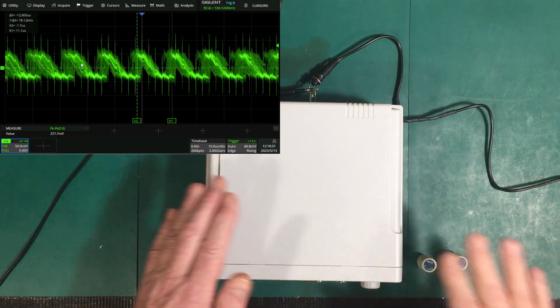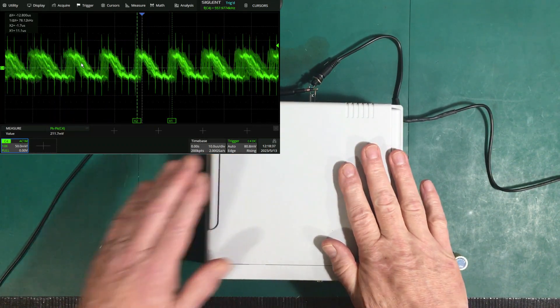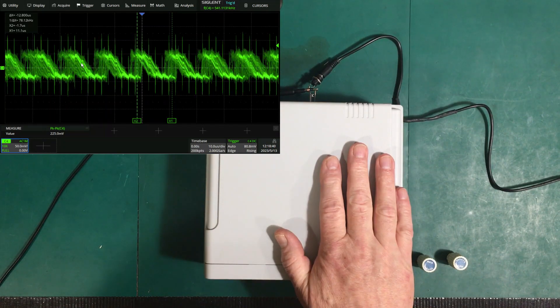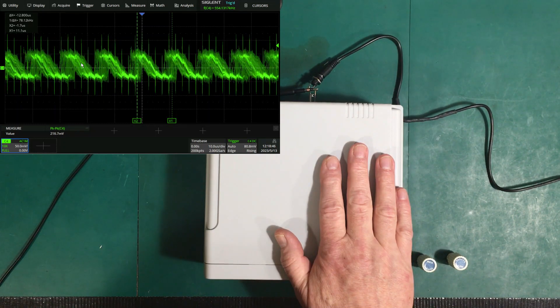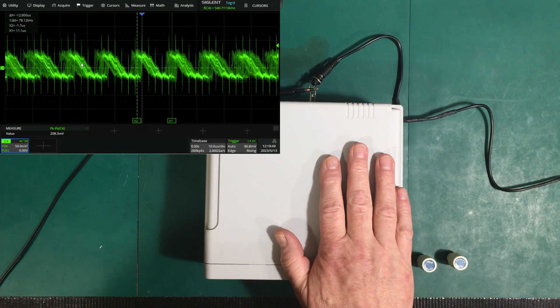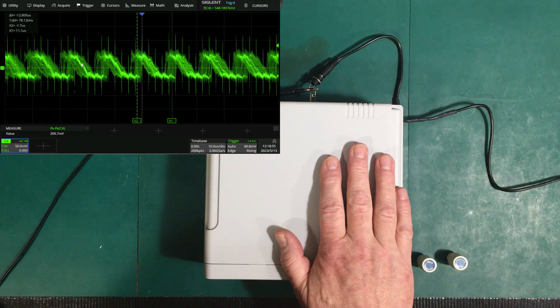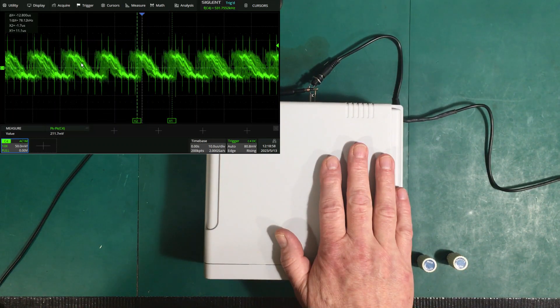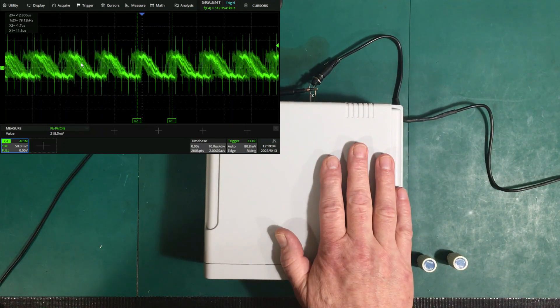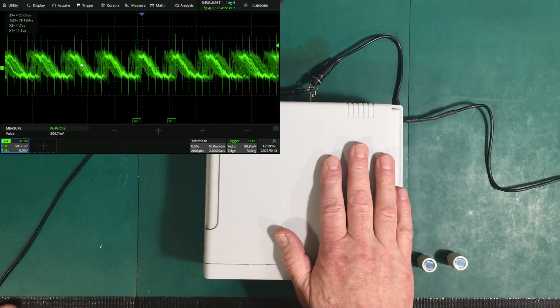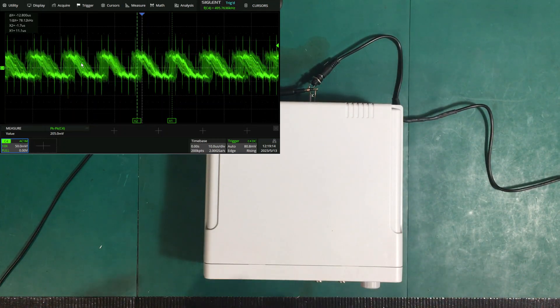We've got the power supply plugged in and the machine turned on but no load on the output. This is the kind of noise we're getting - about 210 to 215 millivolts peak-to-peak. The main frequency here is about 78 kilohertz, but there are components in there running up to 530 to 540 kilohertz as well. There's a lot of different mixed noise here.